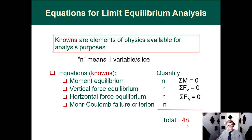Now let's look at how many equations and unknowns we have to solve the limit equilibrium analysis. For a two-dimensional analysis with n slices, we have three static equilibrium equations per slice: moment equilibrium, vertical force equilibrium, and horizontal force equilibrium. We can also write the Mohr-Coulomb failure criterion for each slice. Adding these up gives us 4n equations to work with.